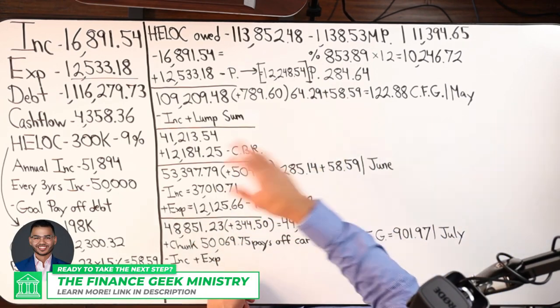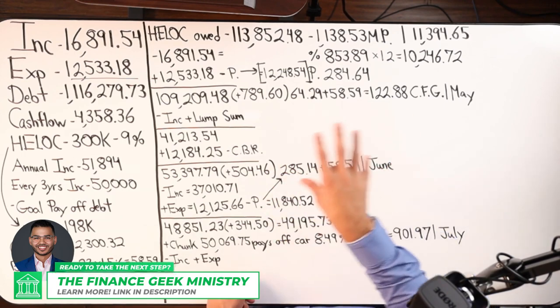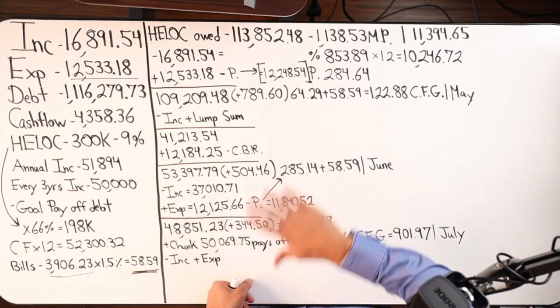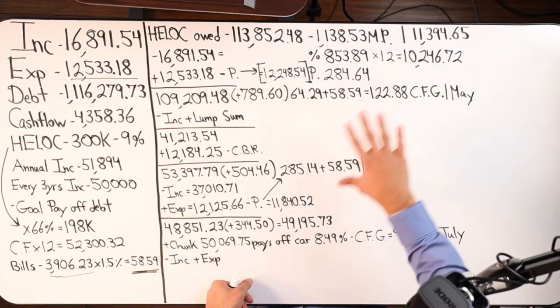We could get our feet wet by simply practicing the concept a couple more months to get really comfortable. Money going in, money coming out, money going in, money coming out. Creating that velocity of money flow. I'm illustrating making that chunk in July, three months later from our start date, May, June, July.